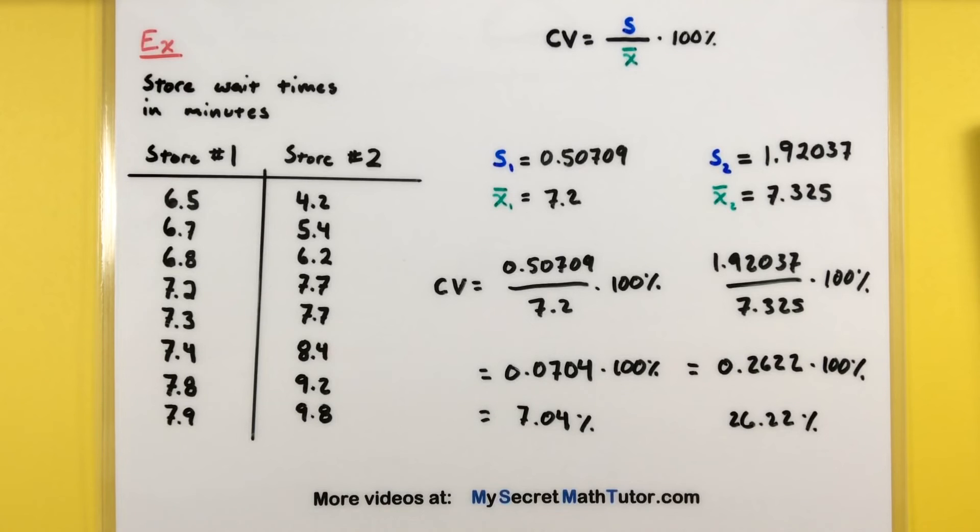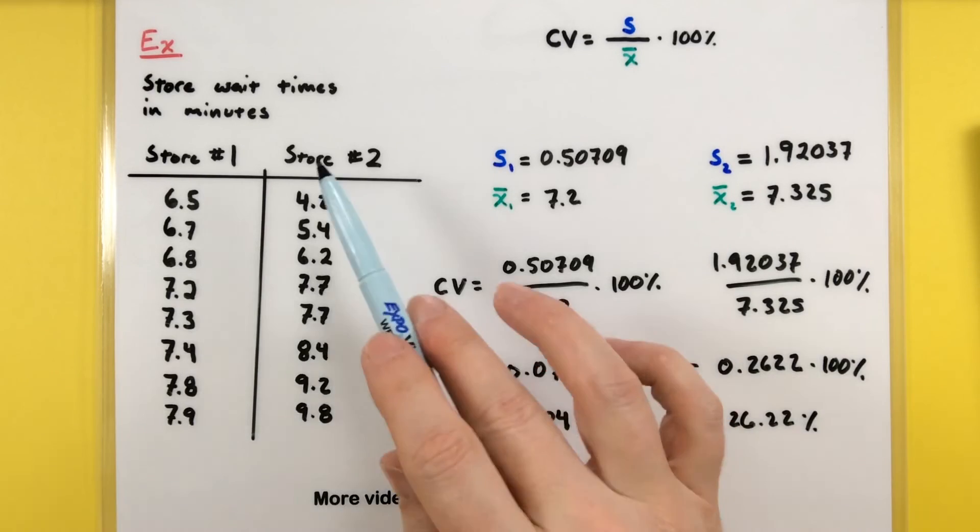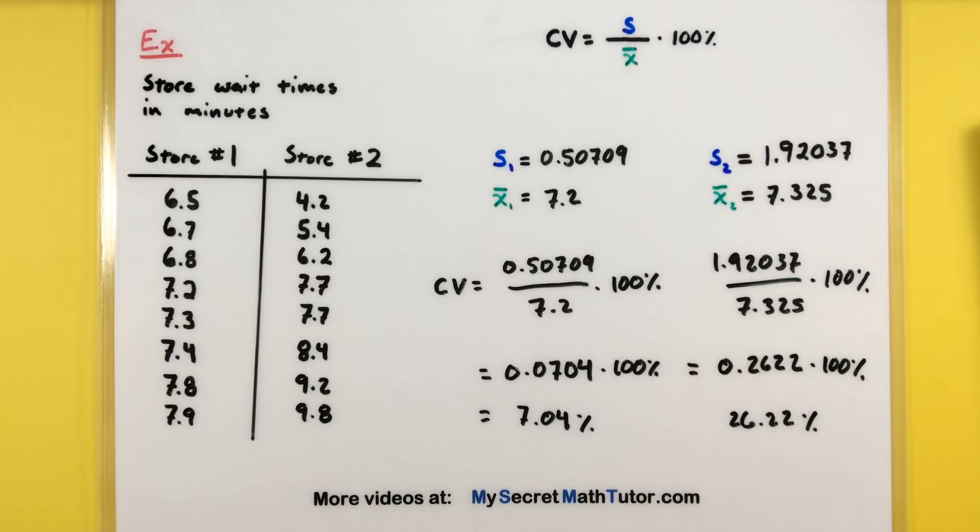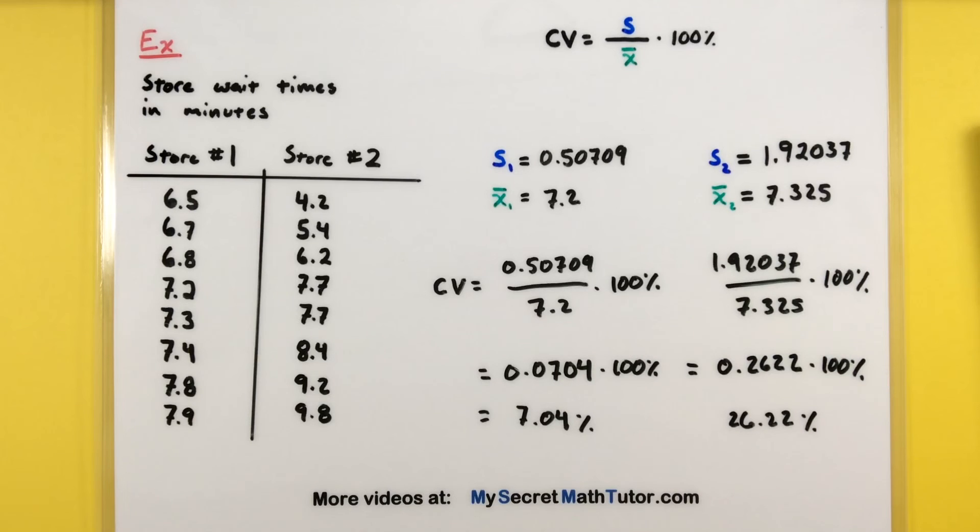And what this is really telling us is that we have actually more variation for store number two. And to really get a sense that that's kind of what we're measuring, imagine both these had exactly the same mean, then you're essentially just measuring that standard deviation.